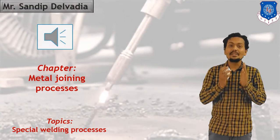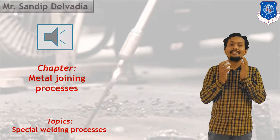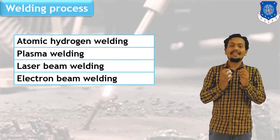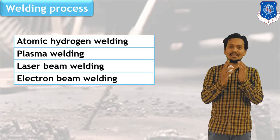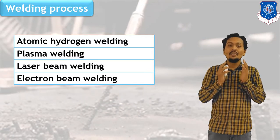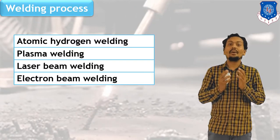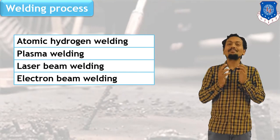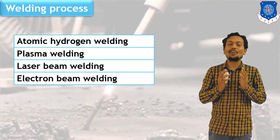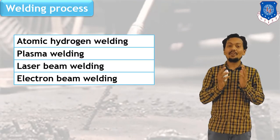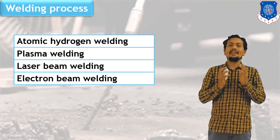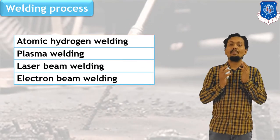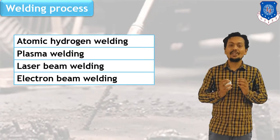In welding, our purpose is to generate heat and that heat can be utilized for joining of two metals. Under the category of special welding processes, I have mentioned a few processes: atomic hydrogen welding, plasma welding, laser beam welding, and electron beam welding. All these processes are special processes. Let us start our discussion one by one, beginning with electron beam welding.